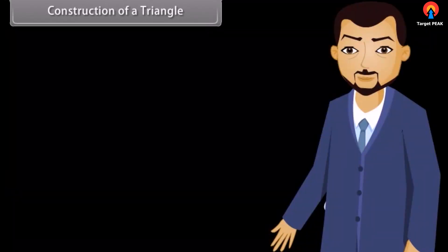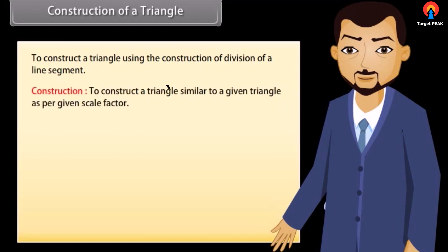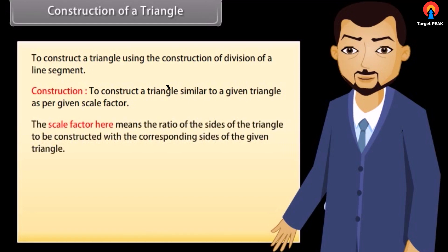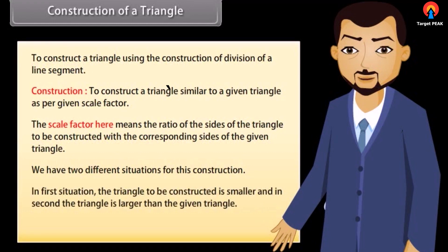We will now learn to construct a triangle using the construction of division of a line segment. Construction: to construct a triangle similar to a given triangle as per a given scale factor. The scale factor here means the ratio of the sides of the triangle to be constructed with the corresponding sides of the given triangle. We have two different situations: in the first, the triangle to be constructed is smaller, and in the second, the triangle is larger than the given triangle.